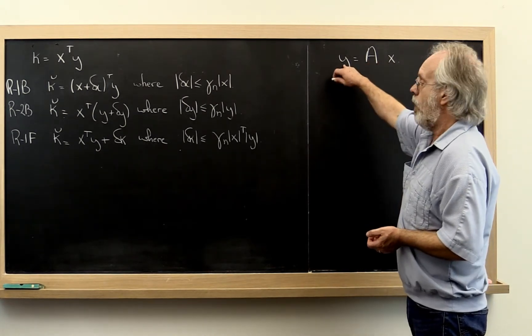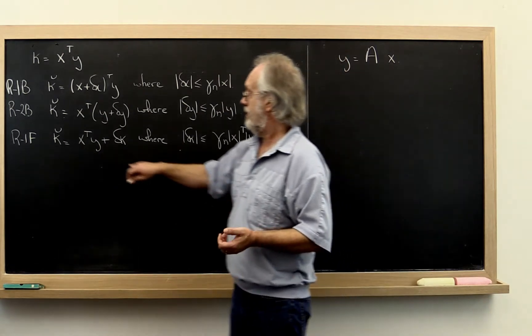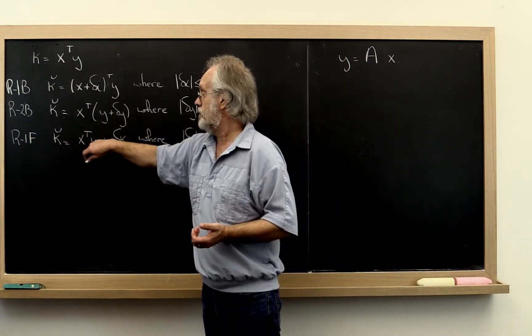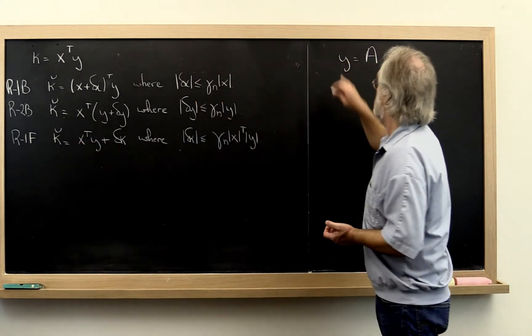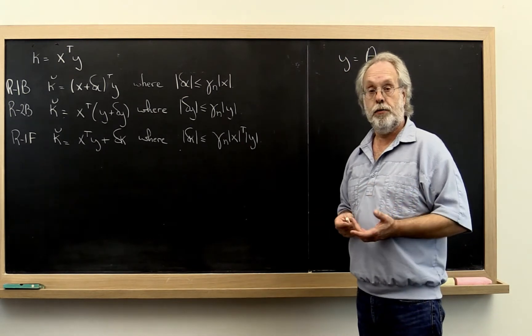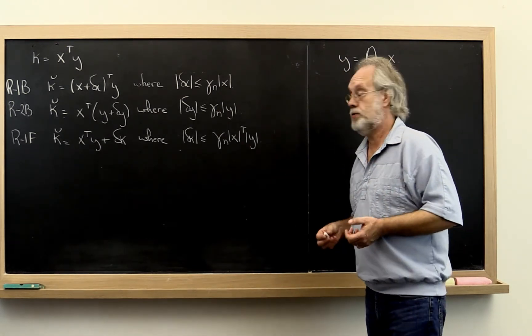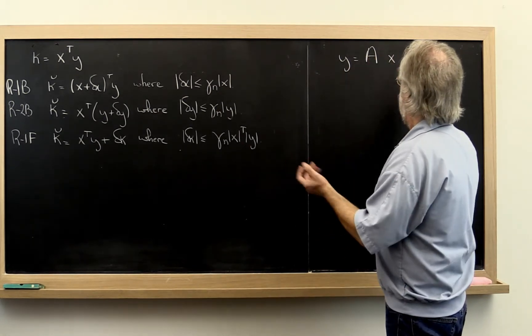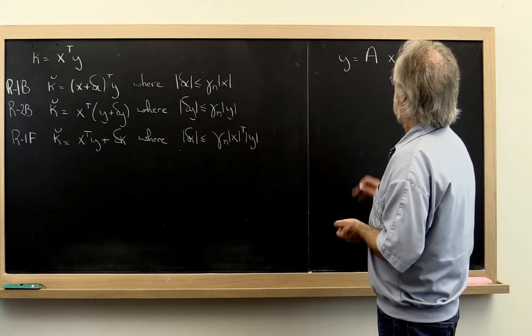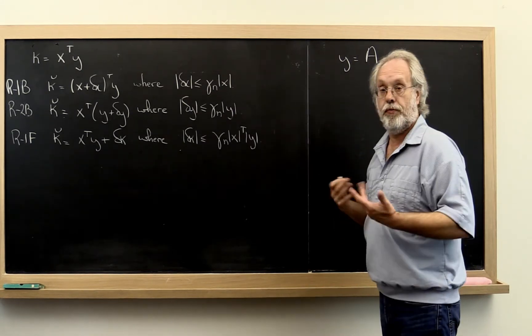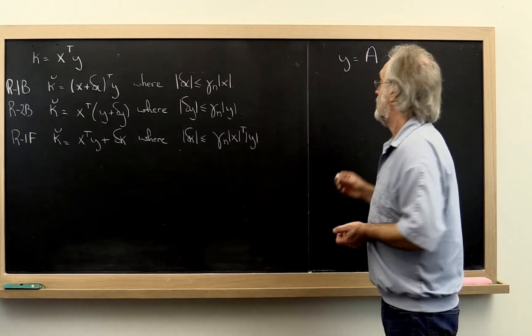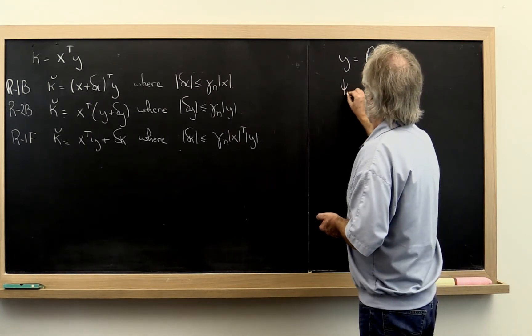Now this y is obviously different than this y because here we're using it in a dot product and here it's the result of a matrix-vector multiply. But by now you should be used to that. So if we just write this in terms of the dot products that can be performed to compute the matrix-vector multiply, what we get is the following.